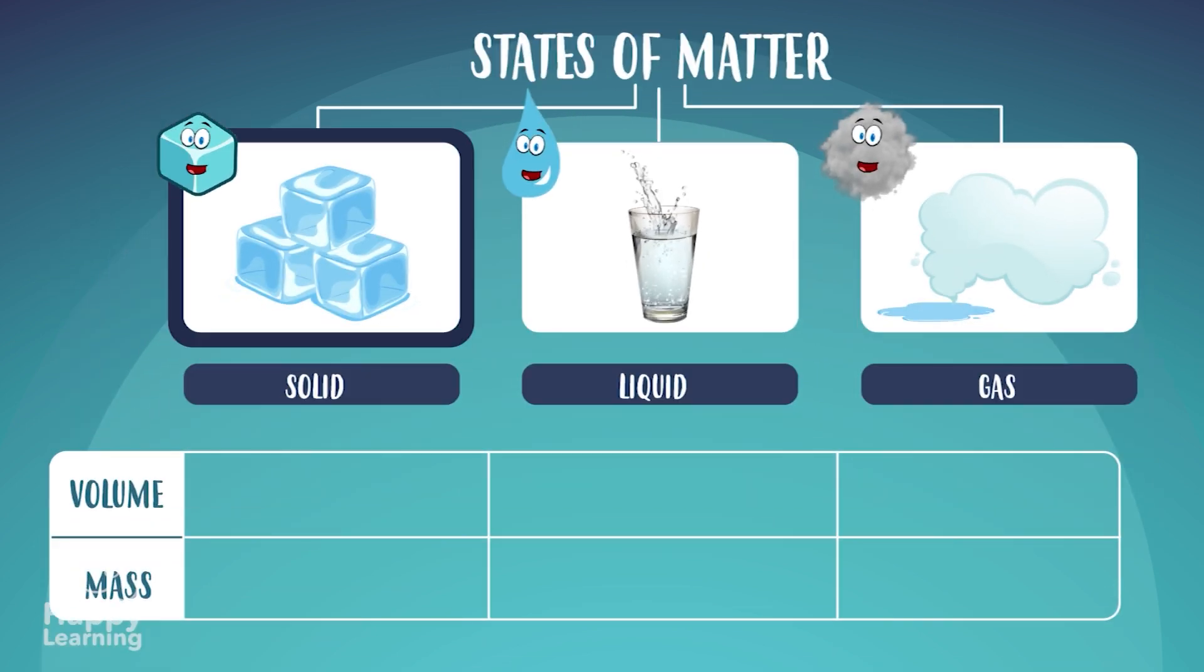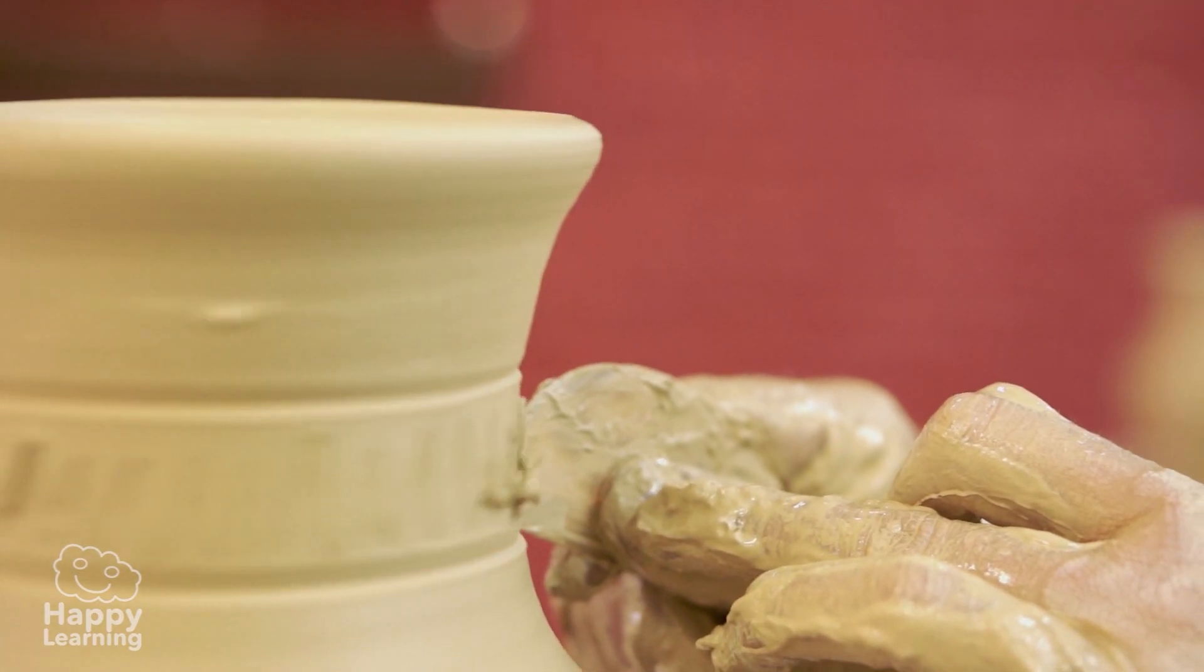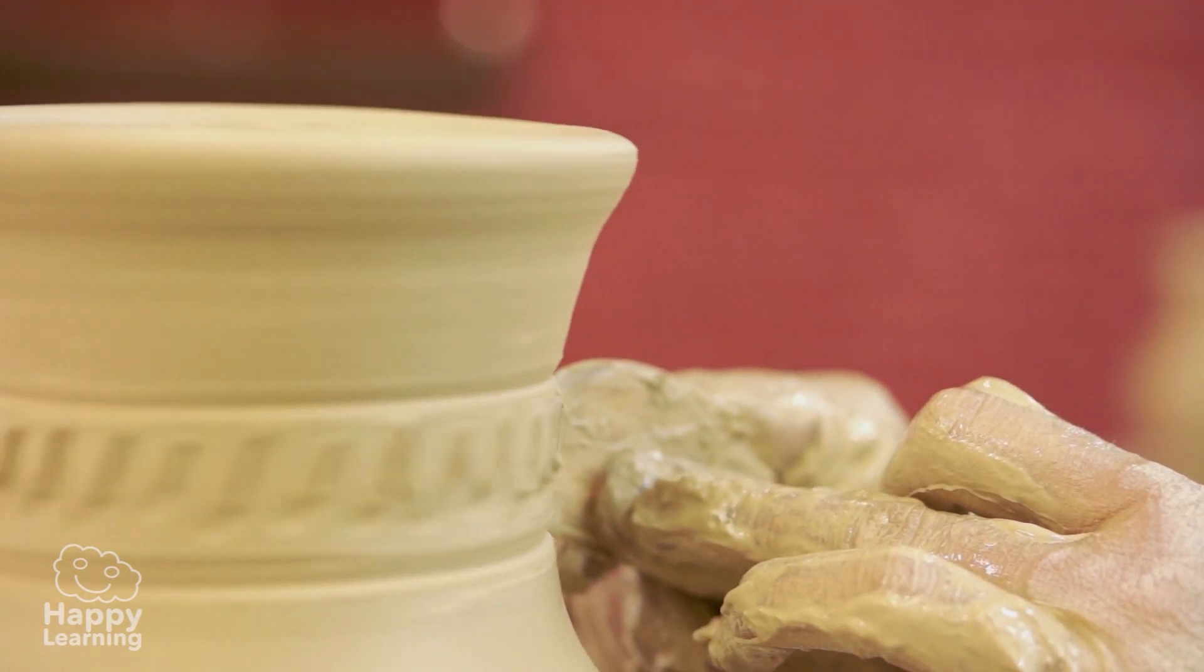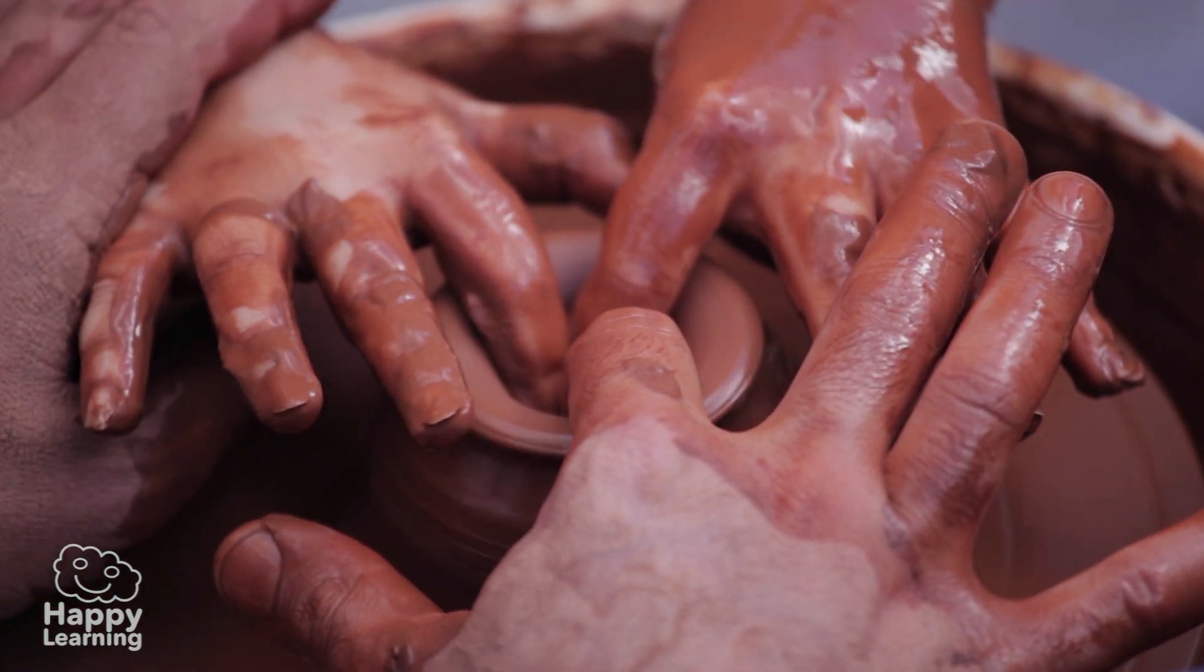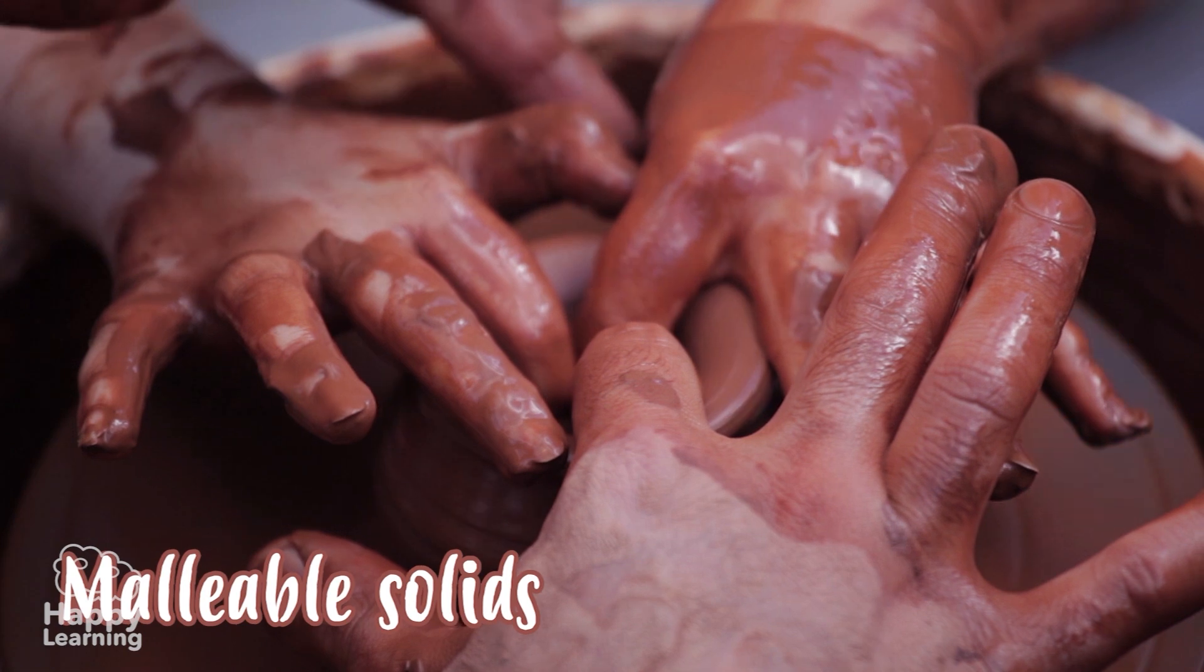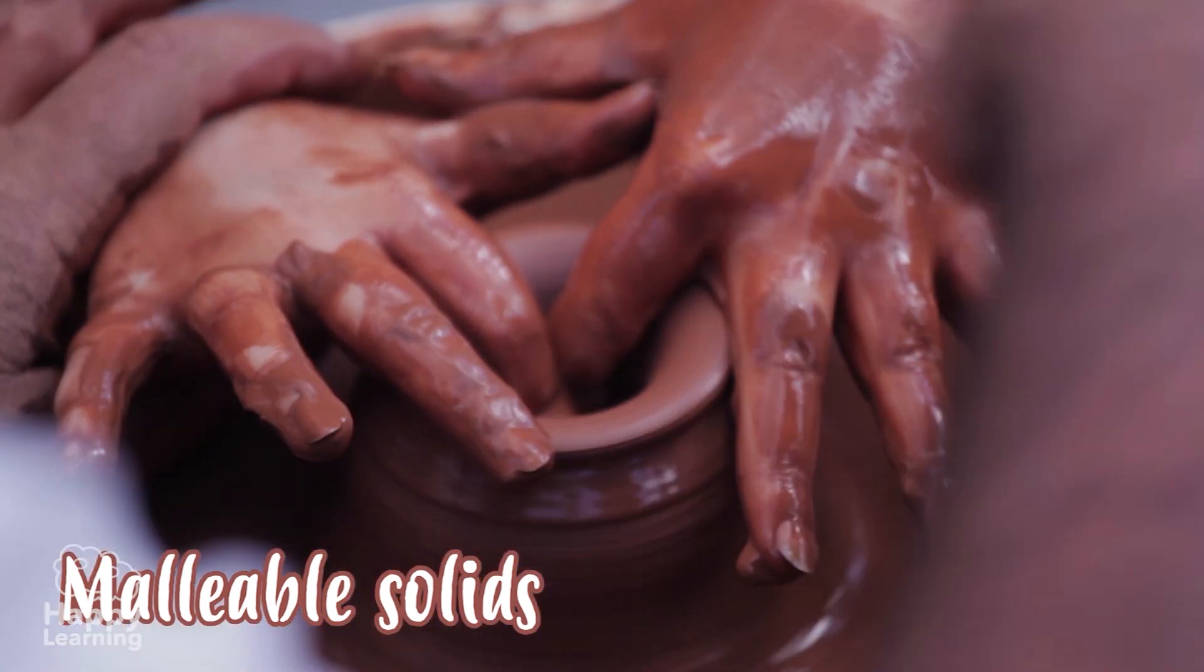Solid state is characterized by having a fixed volume and size. Although, in some cases, we can change its size, like with plasticine or clay. In these cases, they are malleable solids!